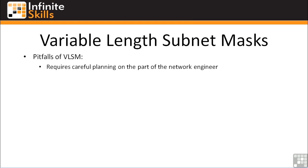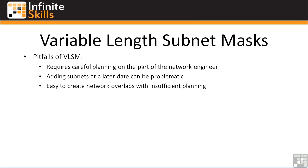With anything that seems too good to be true, there are some pitfalls of using VLSM. First, it obviously requires careful planning on the part of the network engineer. You want to make sure you use the right size networks in all locations, so you don't have to add multiple small networks to a single location when a single larger network would have worked just as well. Adding subnets at a later date can be problematic if you've already used the next network in line for that location somewhere else — and that really gets into route summarization, which we'll cover elsewhere in the course.